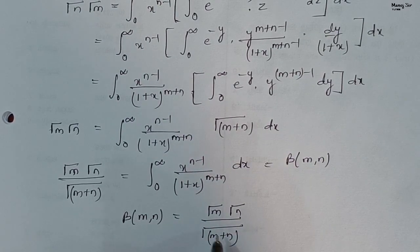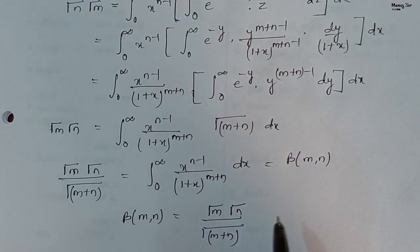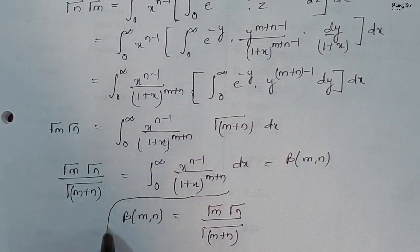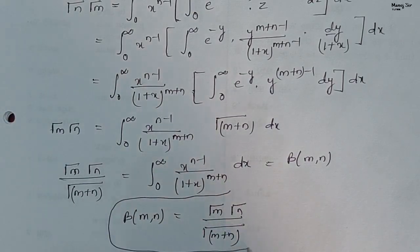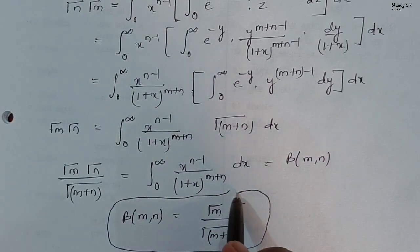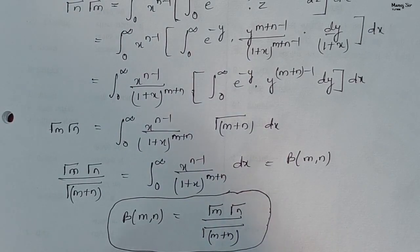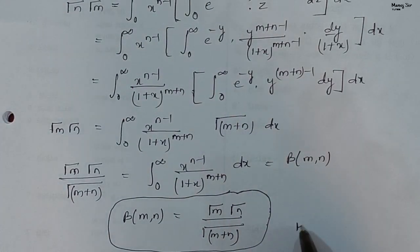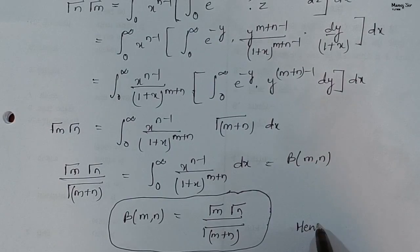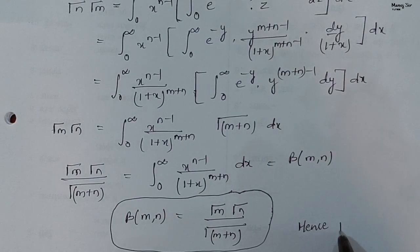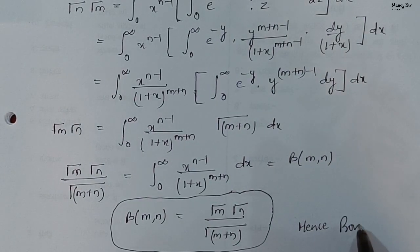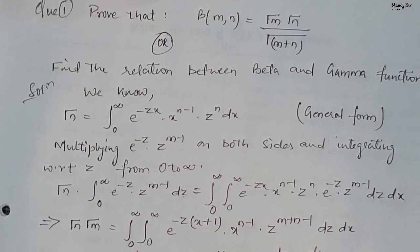So from here, we get the relation between beta and gamma function: beta of m comma n equals gamma of m times gamma of n upon gamma of m plus n. This is a very, very important result. Hence proved, if the question asks to prove it.